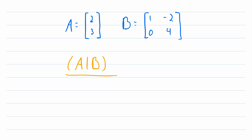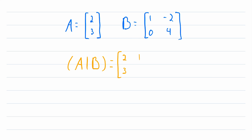So what does this matrix look like? An augmented matrix is created by joining the columns of two matrices. First, we've got the columns of our matrix A — in this case that's just two and three, just one column. Then we've got the columns of our matrix B: one, zero, and then negative two and four. And this is our augmented matrix.